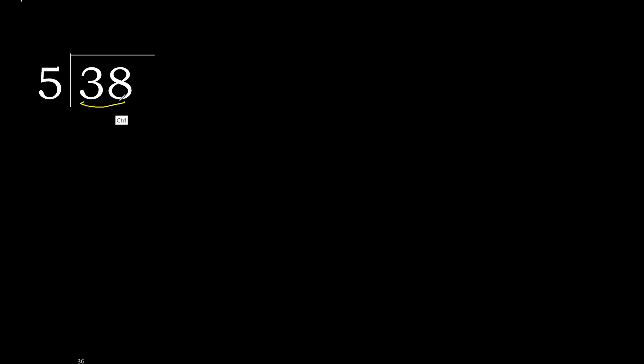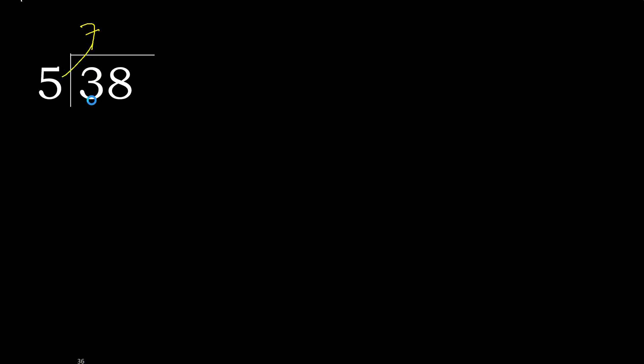38 divided by 5. 3 is less, therefore next with 8. 38 is not less, therefore work with 38. 5 multiplied by which number is nearest to 38 but not greater? 5 multiplied by 8 is 40 — 40 is greater. Multiplied by 7 is 35. 38 minus 35 is 3.